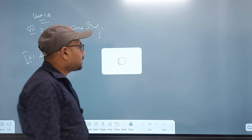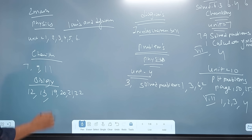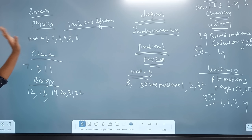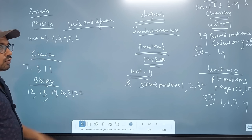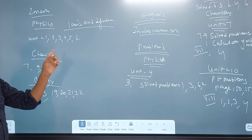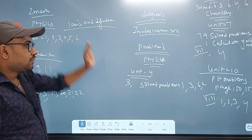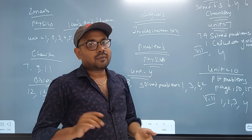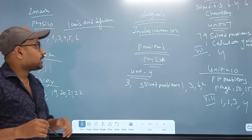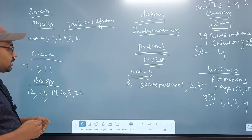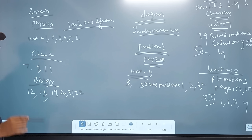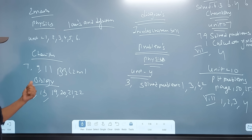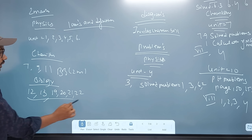I told you the 4 marks and 7 marks. You will study the 2 marks in detail — 1, 2, 3, 4, 5, 6. The last definitions: Snell's Law, Rayleigh Law, Ohm's Law, Newton's Law, Röntgen's Law, Charles' Law, Boyle's Law. Chemistry Units 7, 9, 11 book back — all 2 marks are good. In Biology, Units 12, 13, 19, 21, 22 book back 2 marks are good.